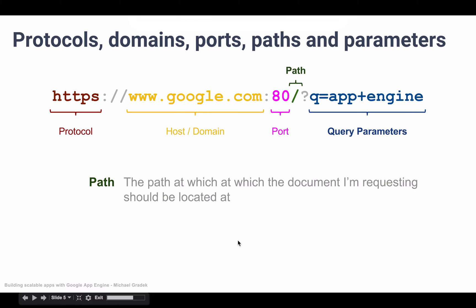The next thing is the path. The path essentially tells where the resource we're looking for is located. If we're looking for the homepage, it's normal that the path is just a forward slash, because we're just looking for the homepage, so the URL is pretty clean. But imagine we were looking for a post in a blog — this could be www.someblog.com/posts/ and then the title of the post.